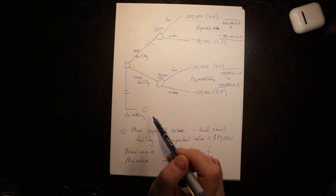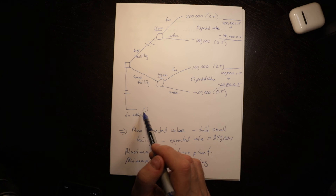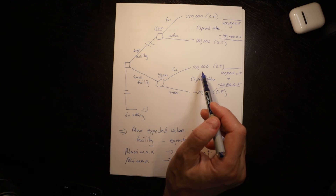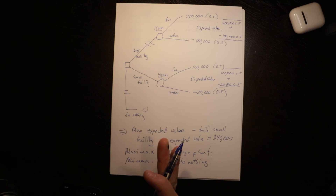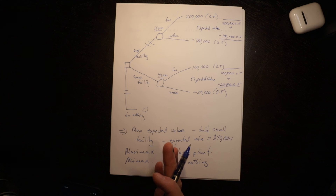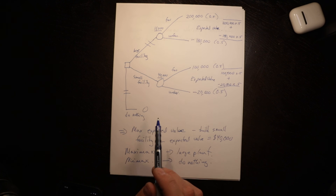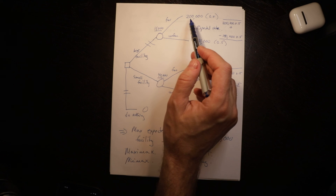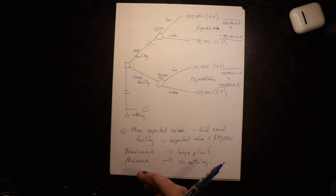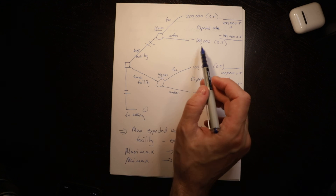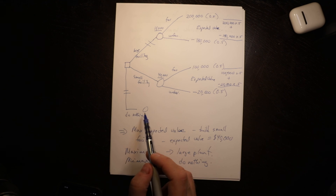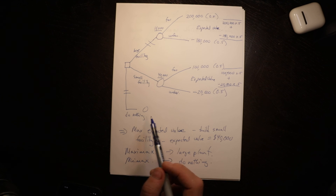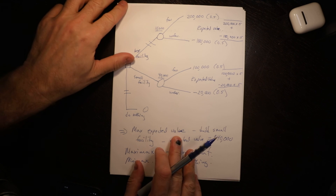If we know the market is going to be favorable, do nothing gives zero, small facility gives $100,000, large facility gives $200,000 — so we would choose $200,000. If we know for sure we're going to have unfavorable conditions, the large facility loses $180,000, the small facility loses $20,000, and doing nothing gives zero. So if we knew for sure we'd have unfavorable market conditions, we would choose to do nothing.